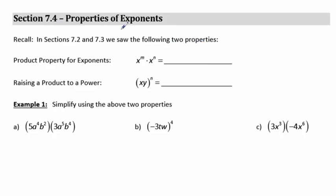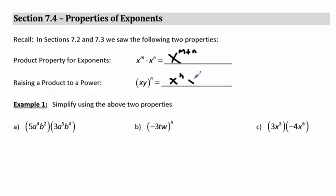Section 7.4 is on properties of exponents. We've already seen two properties in sections 7.2 and 7.3. The product property for exponents says that x to the m times x to the n is x to the m plus n. And the raising a product to a power property says that x times y to the n is the same thing as x to the n times y to the n.